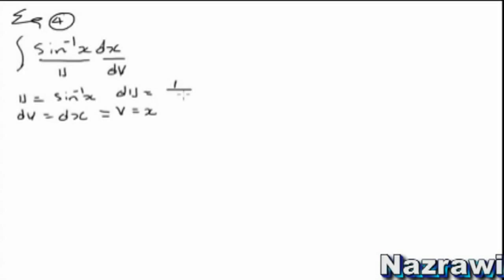Sin inverse — and the derivative, the du, is one over the square root of one minus x squared, times dx. It's a sign — okay, now let's substitute.